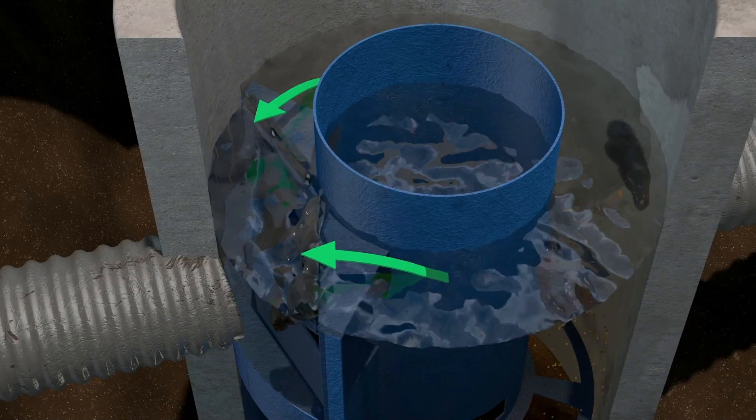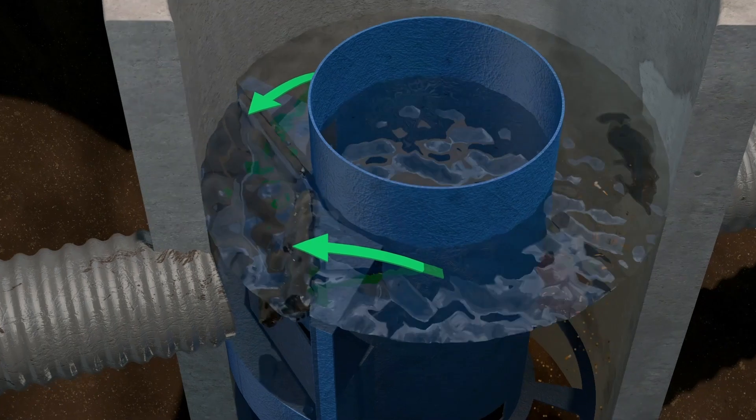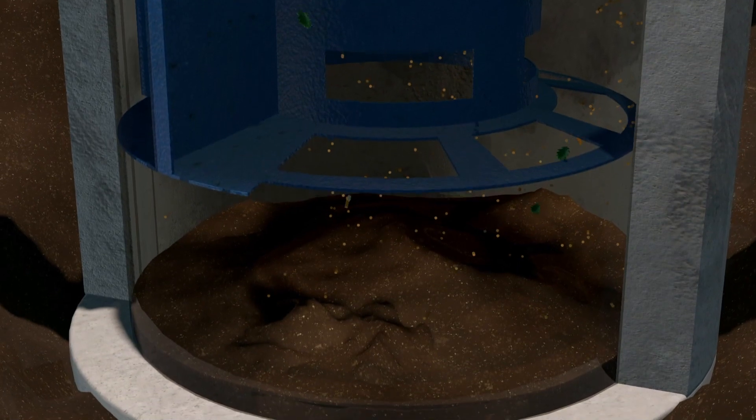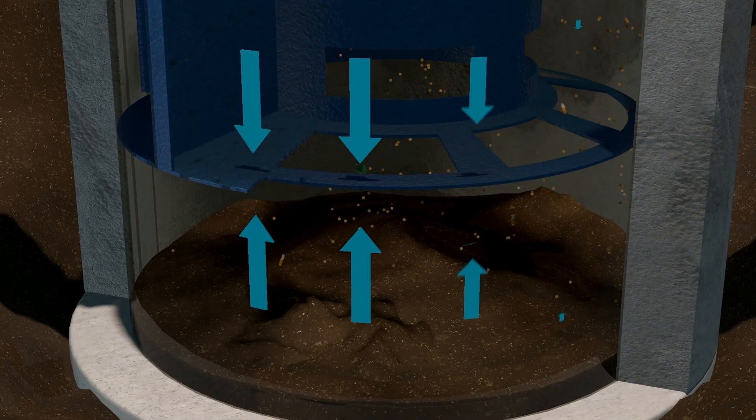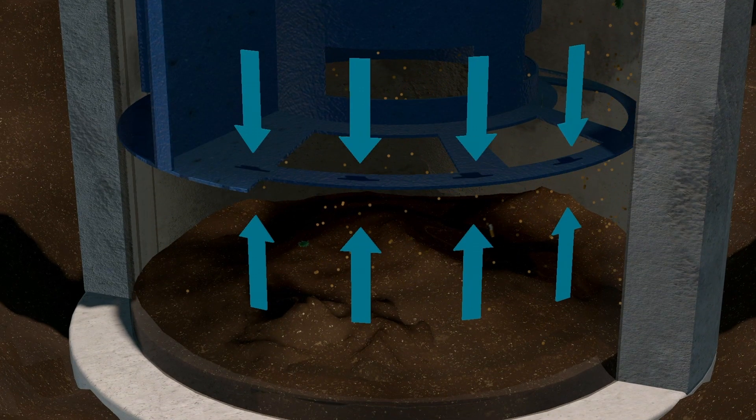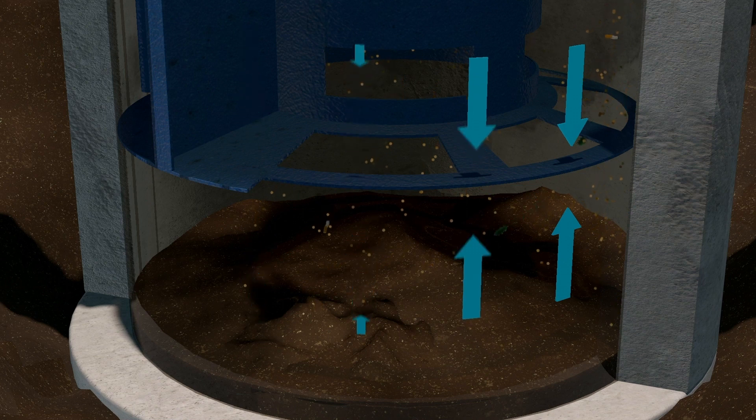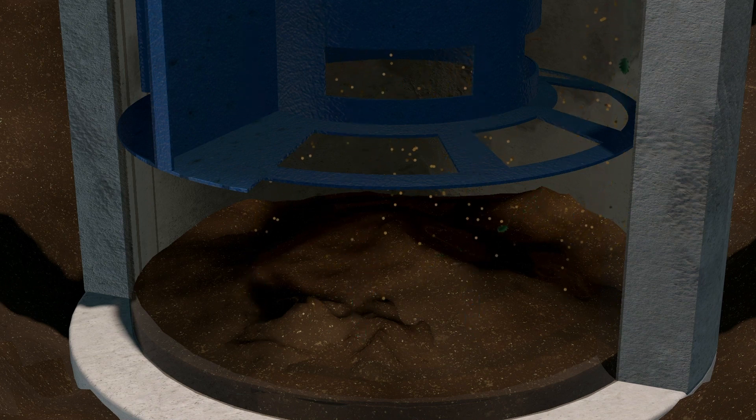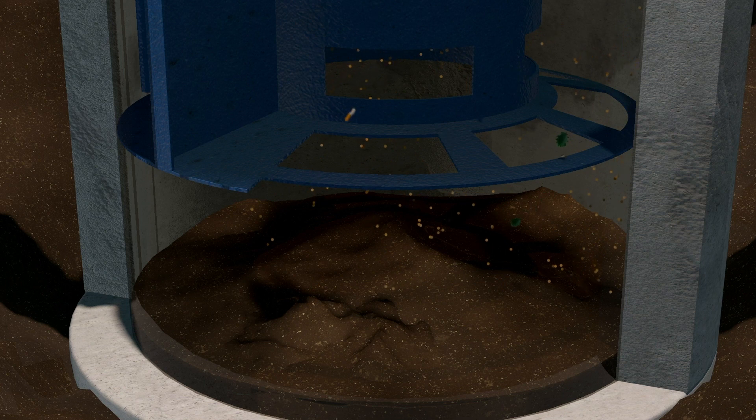The Cascade Separator incorporates a unique slanted skirt that equalizes the pressure between the storage and treatment zone while reducing the potential for scour. The skirt also allows transport of sediment and debris into the sump zone for easy removal after the storm event subsides.